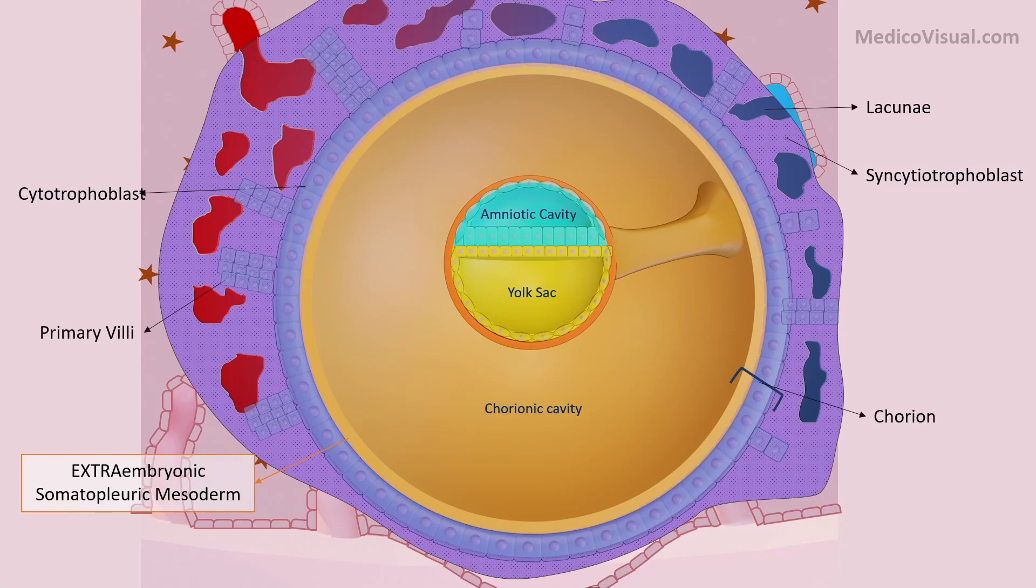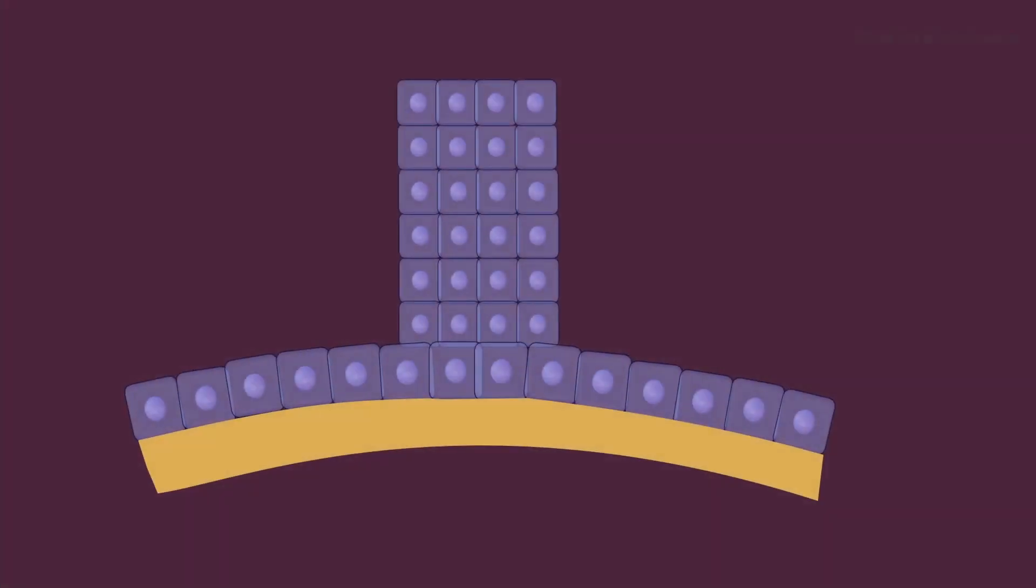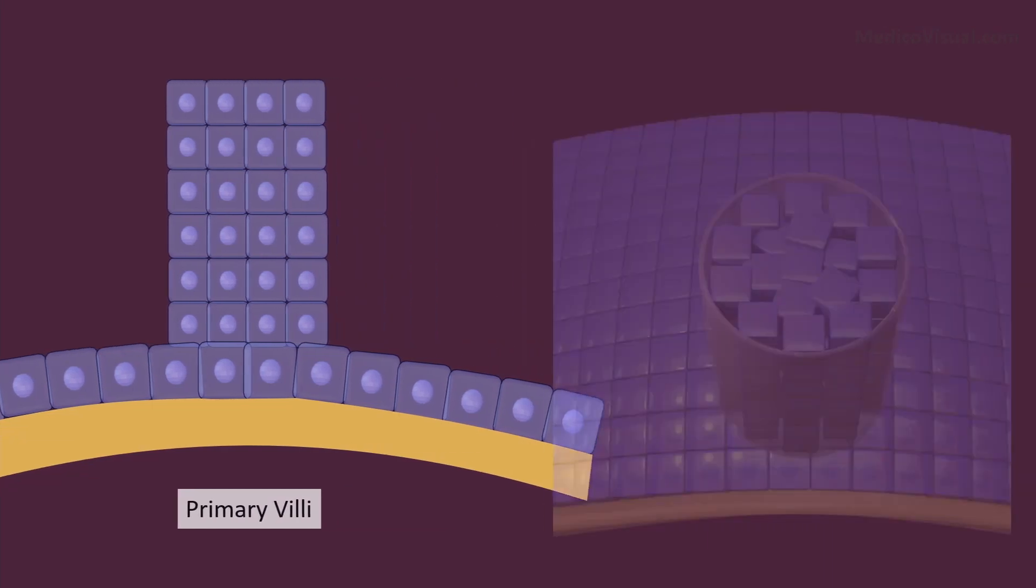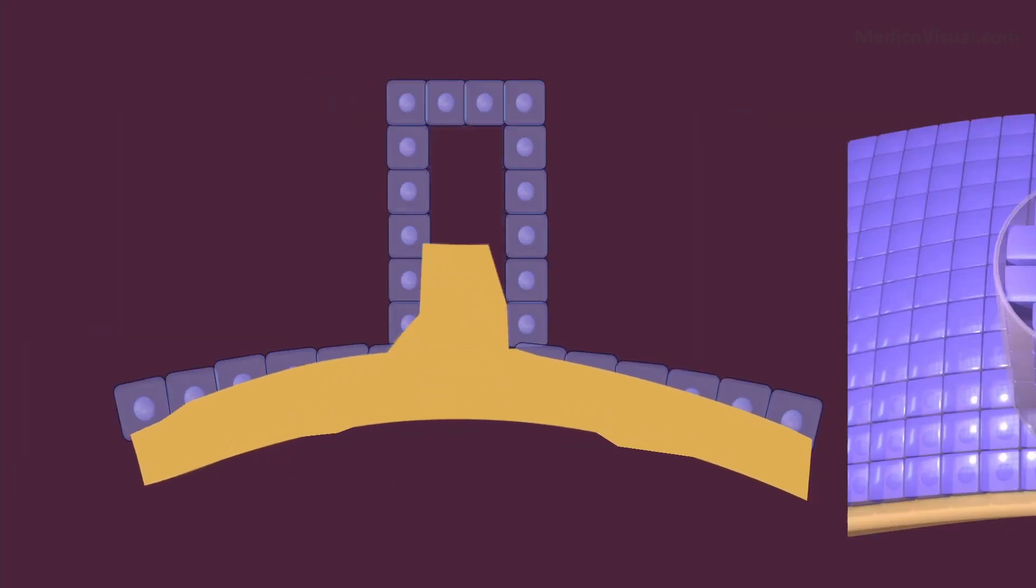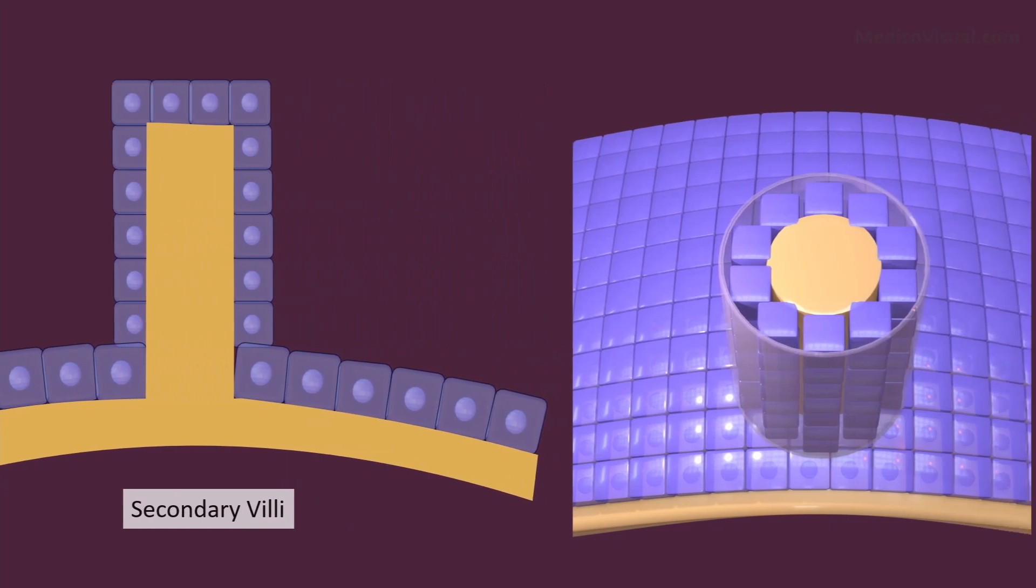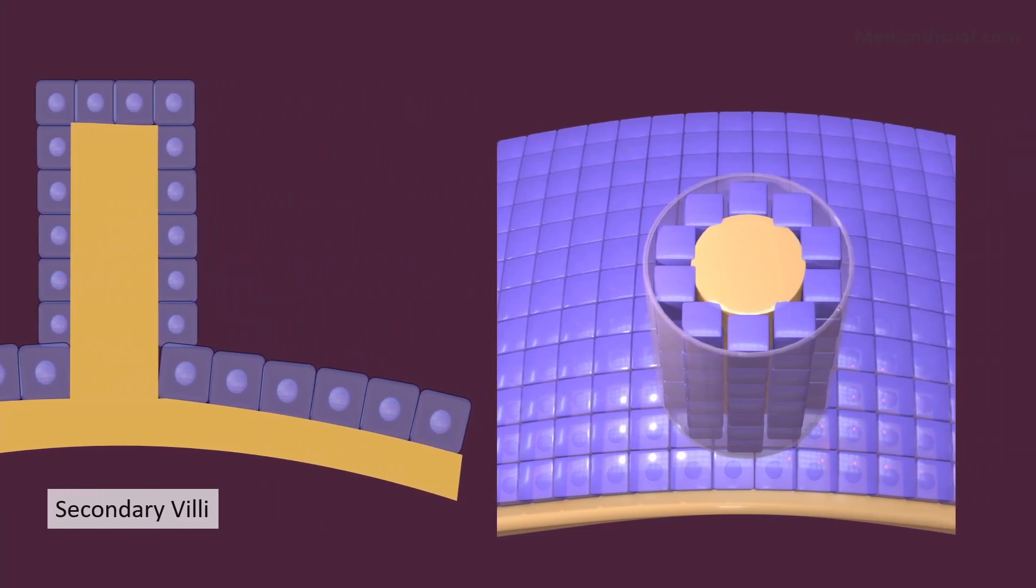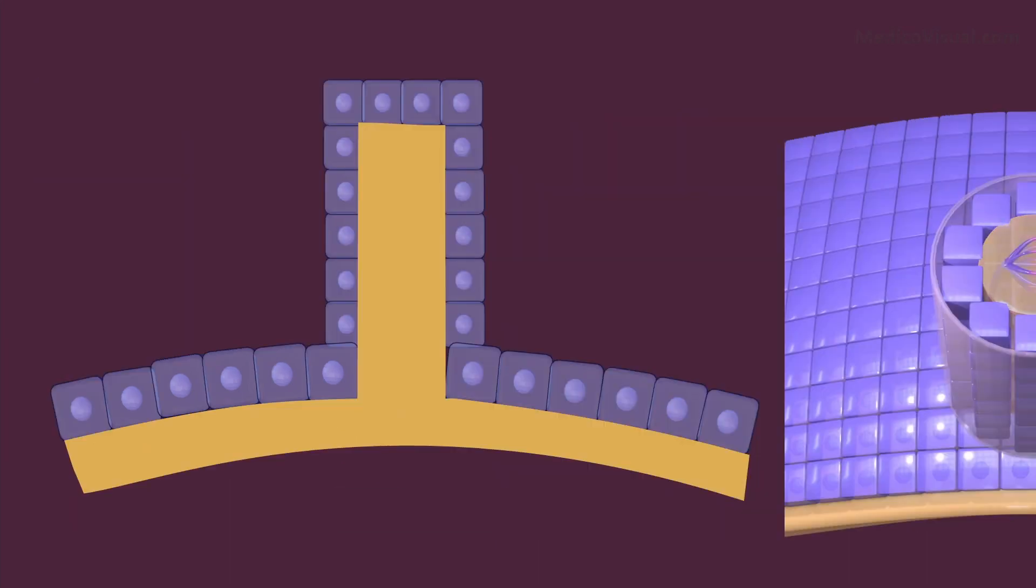Another noticeable thing at the end of second week was that embryo was covered with the primary villi that are solid finger-like processes of cytotrophoblast. In third week, a mesenchymal extension from the underlying extraembryonic mesoderm develops into the core of these primary villi, transforming them into the secondary villi. This mesenchyme then forms the blood vesculature of these villi that are now termed as tertiary villi.